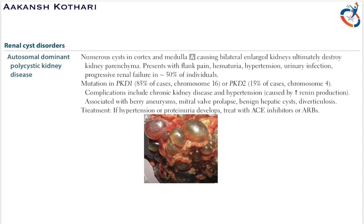Berry aneurysm is a dilatation of the vessels in the brain and is the major cause of death in autosomal dominant polycystic kidney disease. There is also diverticulosis. So the major cause of death in ADPKD is due to berry aneurysm.